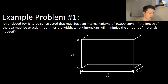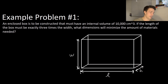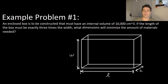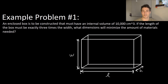Example problem one says: an enclosed box is to be constructed that must have an internal volume of 10,000 centimeters cubed. If the length of the box must be exactly three times the width, what dimensions will minimize the amount of materials needed? So first we're going to do our first step in the strategy, and that's going to be to define the constraint function.